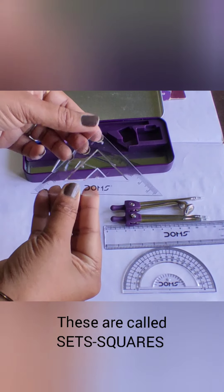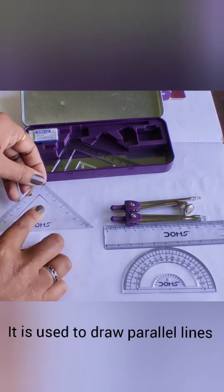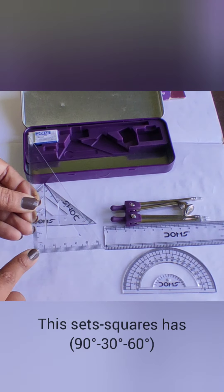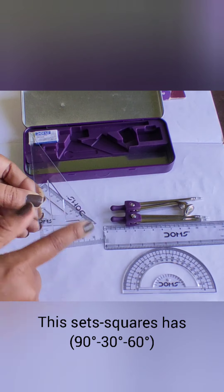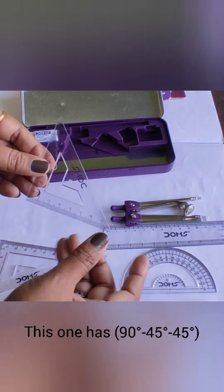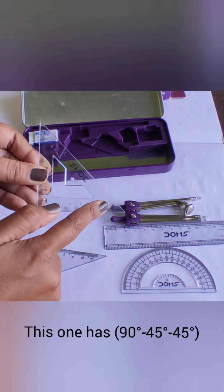These are called the set squares. They are used to draw parallel lines. This set square has 90 degree, 30 degree and 60 degree angles. And this one has 90 degree, 45 degree and 45 degree angles.